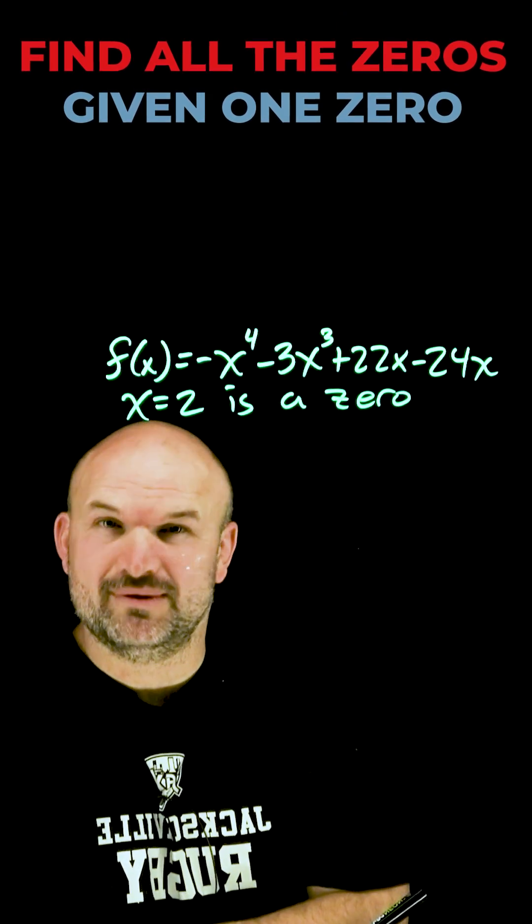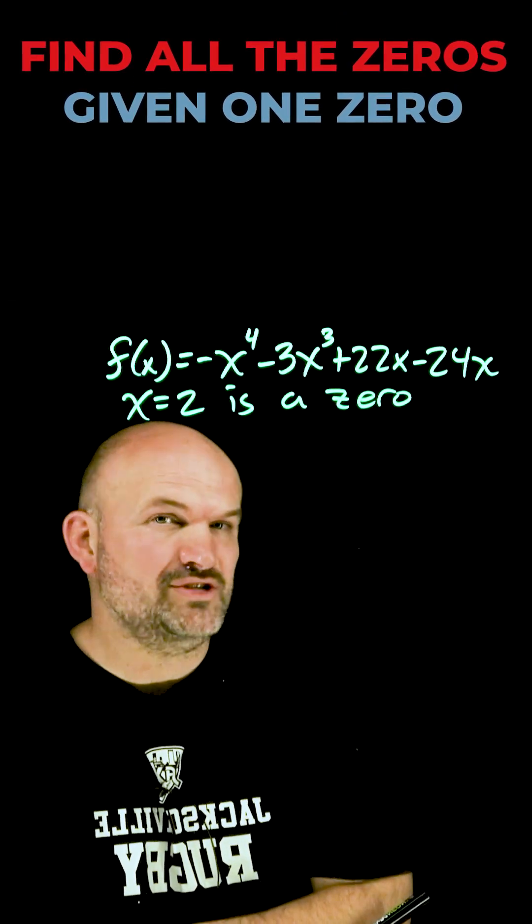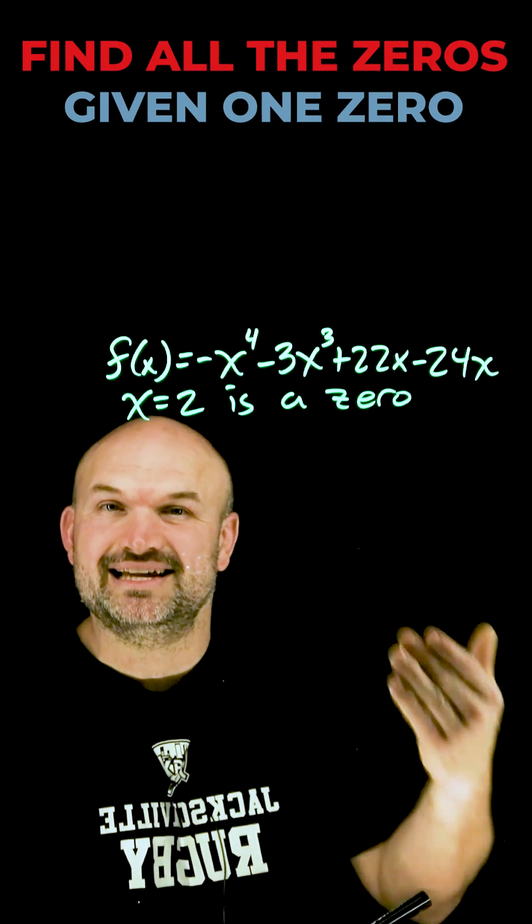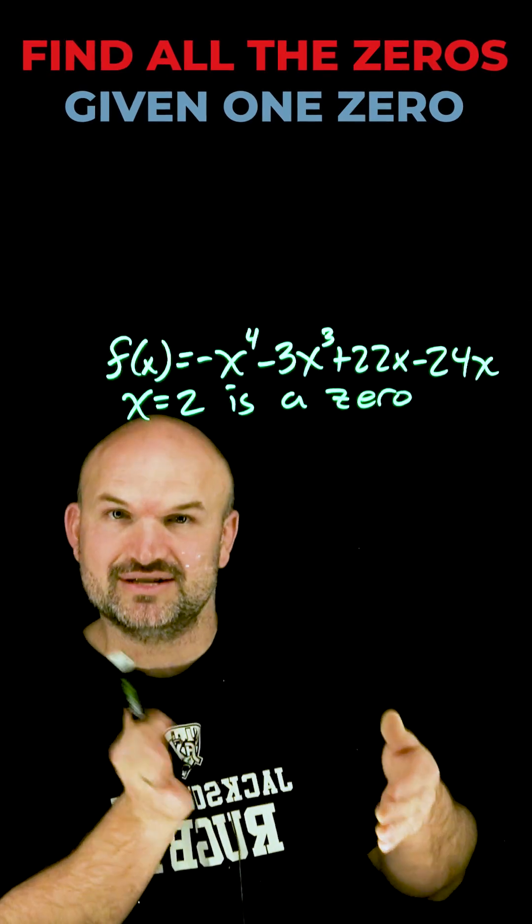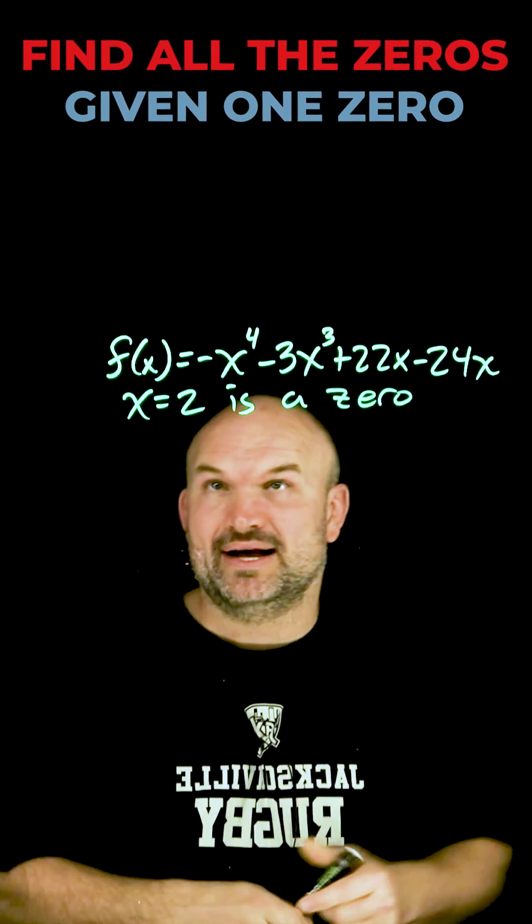When you're given a polynomial and a zero and you need to find the remaining zeros, what you need to be able to do first is use synthetic division to find the remaining factors and then set that equal to zero to go ahead and solve.